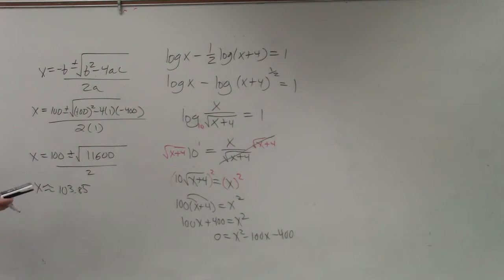And then I'll do 100 minus the square root of 11,600 and divide that by 2. And x is approximately negative 3.85.